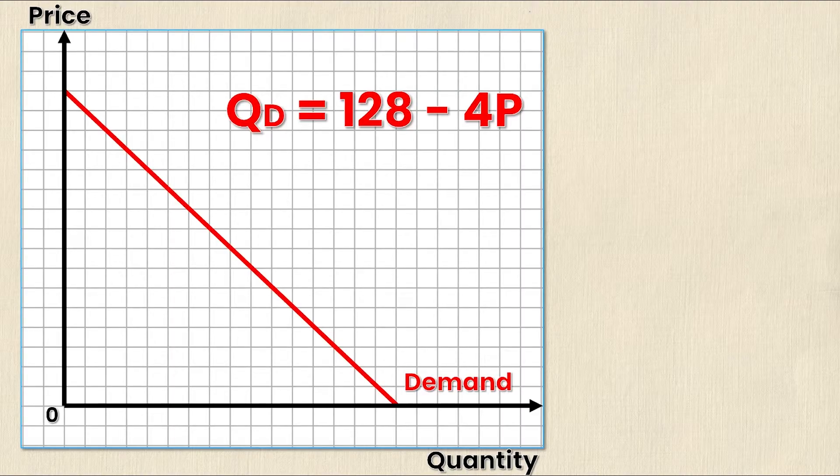Now that I have a general supply and demand curve drawn as well as my demand equation, I can now start labeling this demand curve to actually make it represent the equation that I'm given. I'm going to start labeling these two points right here. This is the price intercept and the quantity intercept, also known as the y and x intercepts.